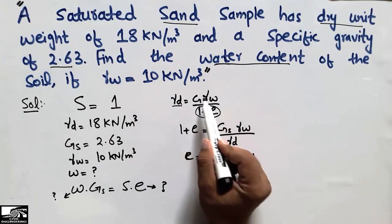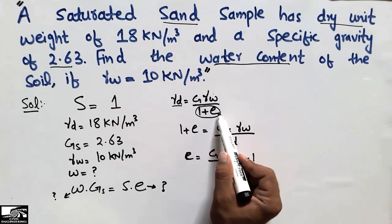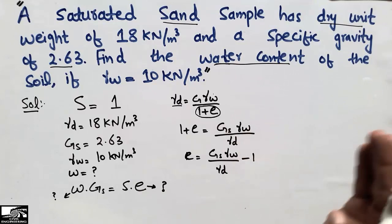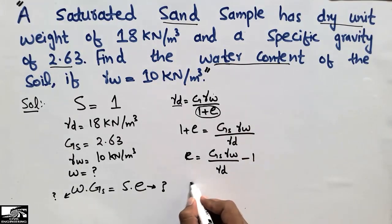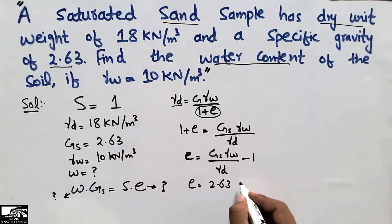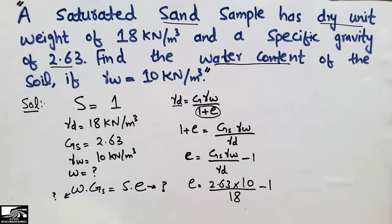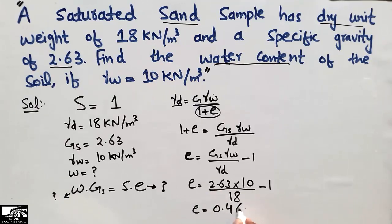In this formula, all values are known: Gs = 2.63, γw = 10 kN/m³, and γd = 18 kN/m³. Substituting these values: e = (2.63 × 10 / 18) − 1 = 0.46. So the void ratio comes out to be 0.46.